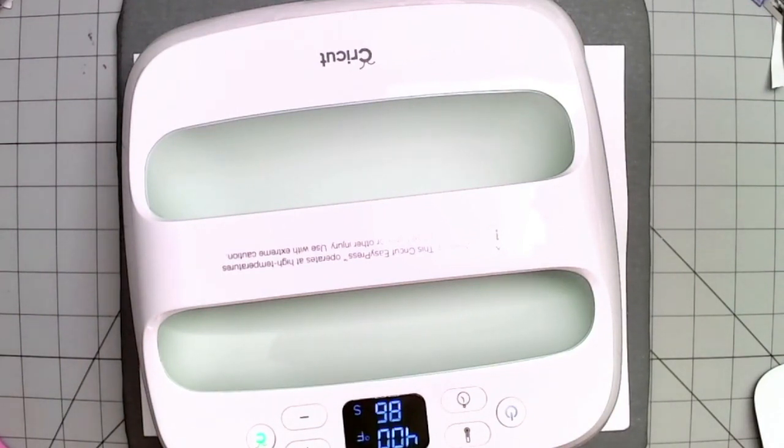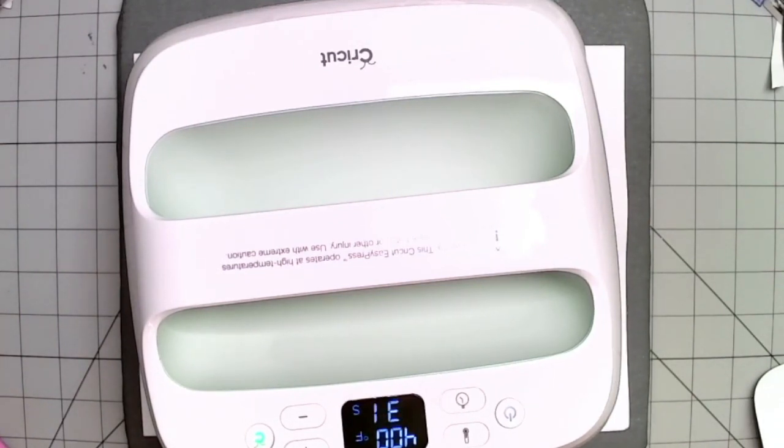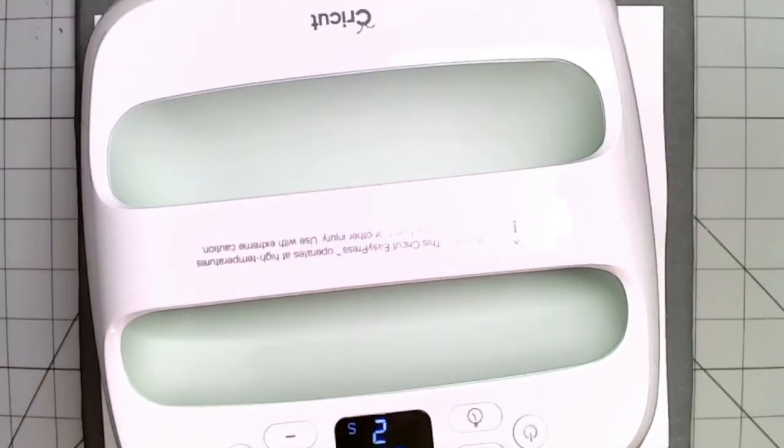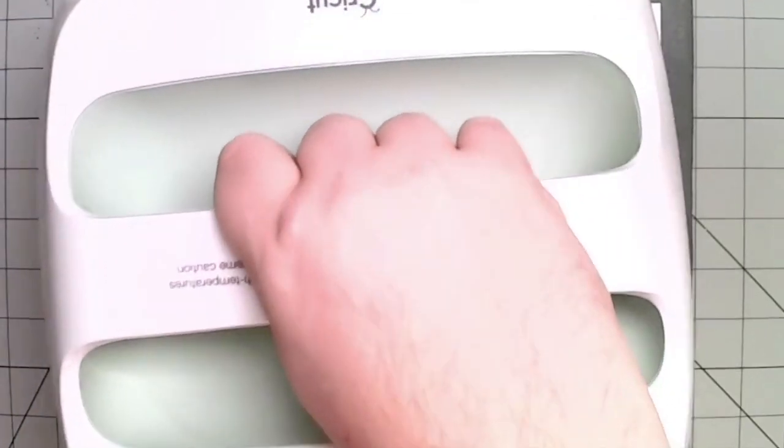And on the Easy Press it's very simple to set that - two different buttons, one for time, one for temperature, and then a plus and a minus. Really super simple, you just plus and minus to get the right temperature and the right time. Now we're down to one second so we can pull off our Easy Press.